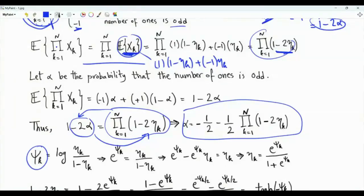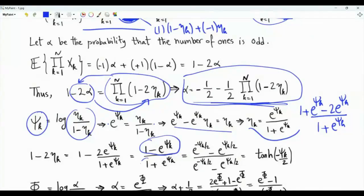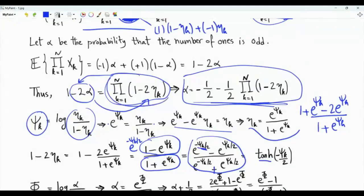Recall that epsilon_k is a log likelihood ratio: the natural logarithm of eta_k over (1 - eta_k). Thus e^{epsilon_k} equals this ratio. Multiplying both sides by (1 - eta_k) and solving for eta_k, we can write eta_k = e^{epsilon_k} / (1 + e^{epsilon_k}). In the expression for 1 minus 2*eta_k, we get (1 + e^{epsilon_k} - 2*e^{epsilon_k}) / (1 + e^{epsilon_k}), which simplifies to (1 - e^{epsilon_k}) / (1 + e^{epsilon_k}). Multiplying numerator and denominator by e^{-epsilon_k/2}, this becomes the hyperbolic tangent function of minus epsilon_k over 2. So the product from k=1 to n is the product of tanh(-epsilon_k / 2).